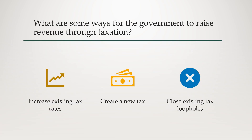What are some ways for the government to raise revenue through taxation? The government could increase existing tax rates — if you're taxed X percent now, raising it to X plus 3 percent is a simple way to raise revenue. The government could also create a new tax, like a carbon tax or a wealth tax. Another approach is closing existing tax loopholes that allow pass-through businesses and others to legally avoid taxes, in order to raise additional revenue.